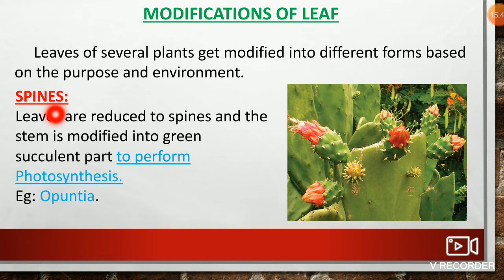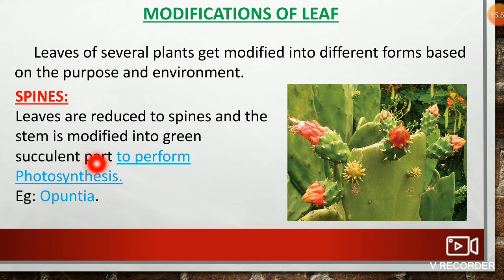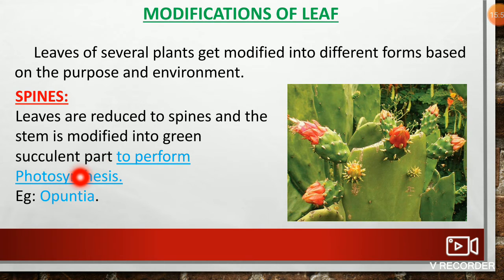Spines: Leaves are reduced to spines and the stem is modified into a green succulent part to perform photosynthesis. For example, Opuntia.